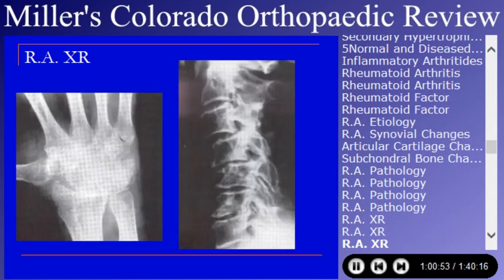The spine is commonly asked in rheumatoid arthritis. C1-C2 instability and subaxial instabilities are the processes that will be looked for.